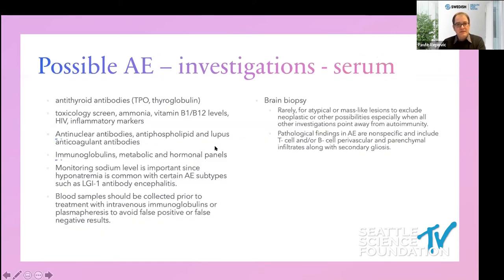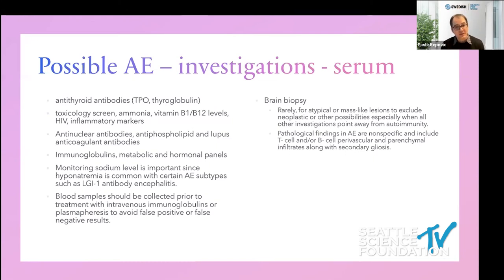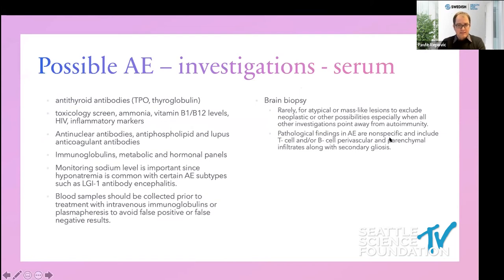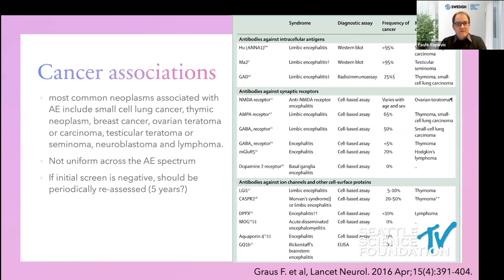In terms of serological investigations, I would suggest antithyroid antibodies, toxicology screen, antinuclear and other immune markers, immunoglobulins, and monitoring sodium — especially for LGI1-associated hyponatremia. Importantly, collect blood samples before giving IVIG or plasma exchange, because testing after those interventions may yield false positive or false negative results. Brain biopsy is fortunately not needed very often and doesn't show a unique finding specific for autoimmune encephalitis — typically only T-cell and B-cell perivascular and parenchymal infiltrates with secondary gliosis.